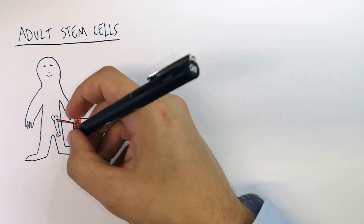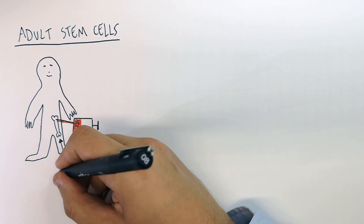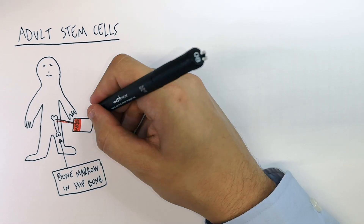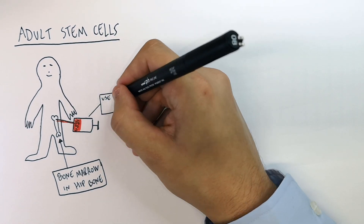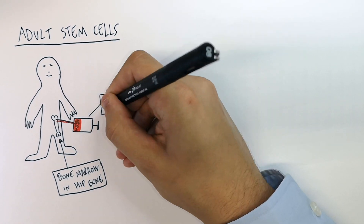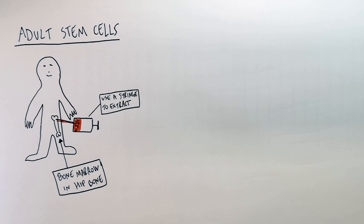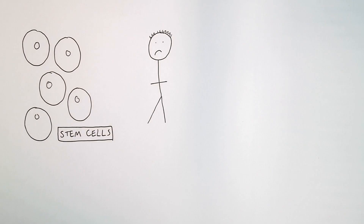This blood will contain stem cells because stem cells are formed in the bone marrow in humans. You will extract stem cells from the bone marrow in the hip bone using a syringe. Stem cells can be used to cure certain diseases.